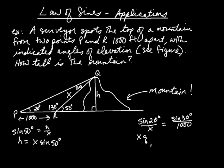I get X sine of 30 degrees is equal to 1,000 times sine of 20 degrees. And now if you divide both sides of this equation by sine of 30, the sines of 30s cancel. And I get X is equal to all of that, right? Now I want to take all of that and I want to replace X here with that expression. Once I do that, at the very end I'll use my calculator. So here we go.